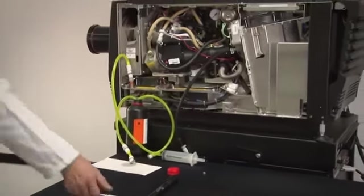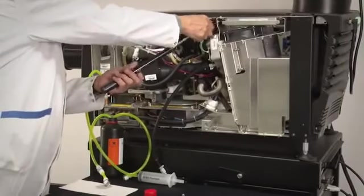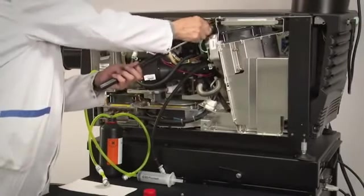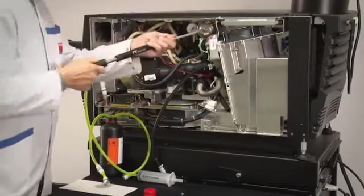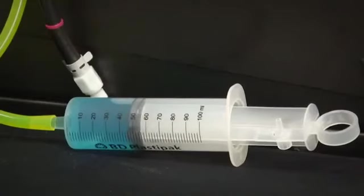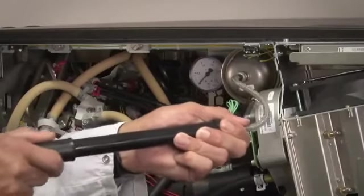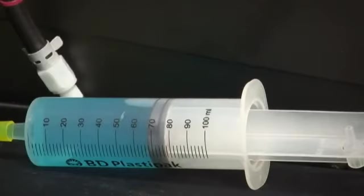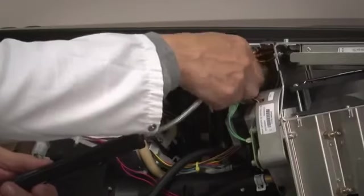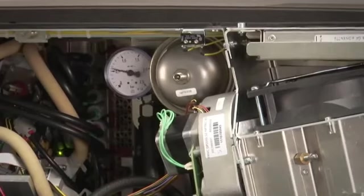Connect the air pump to the Schrader valve. Slowly pump air into the system until the syringe fills up with 75 milliliters of liquid. Once the syringe has reached 75 milliliters, disconnect the air pump and force the liquid into the system until the manometer shows one bar.